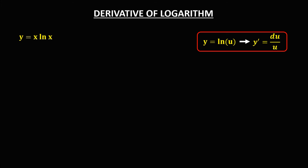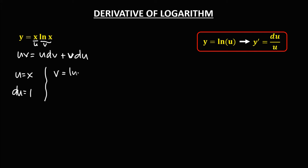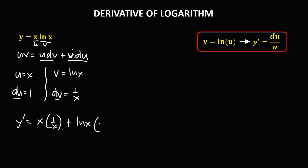For the next given, we use the product rule: u times v, so the derivative equals u times the derivative of v plus v times the derivative of u. Here u equals x, so the derivative of u is 1. And v equals ln x, so the derivative of v is 1 over x.